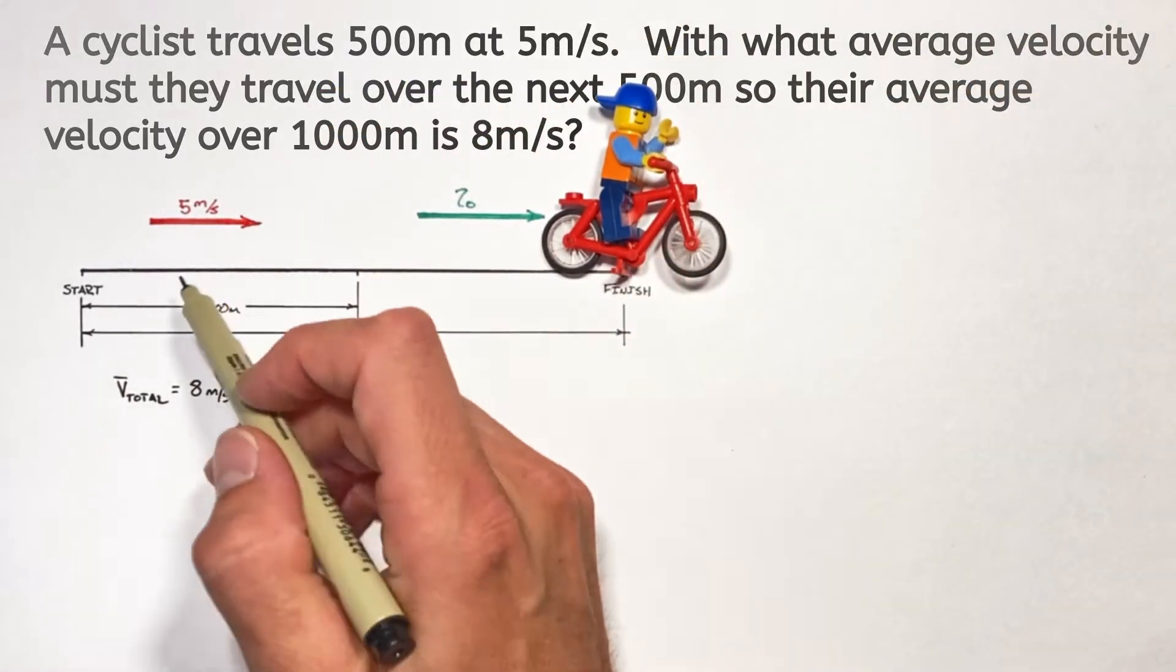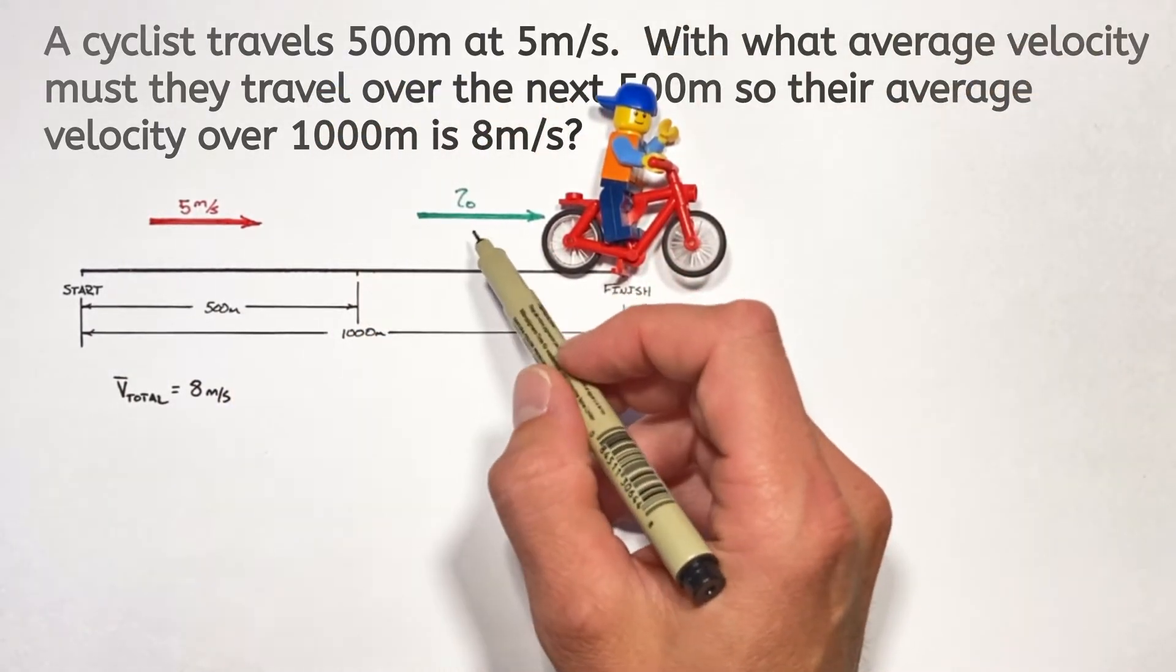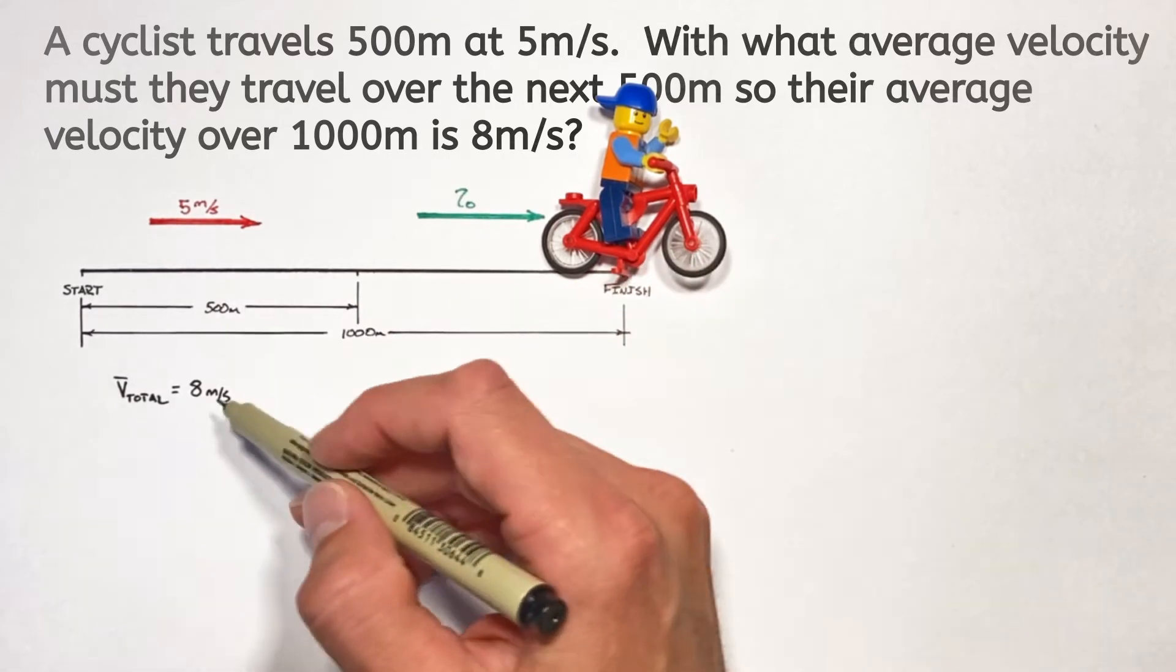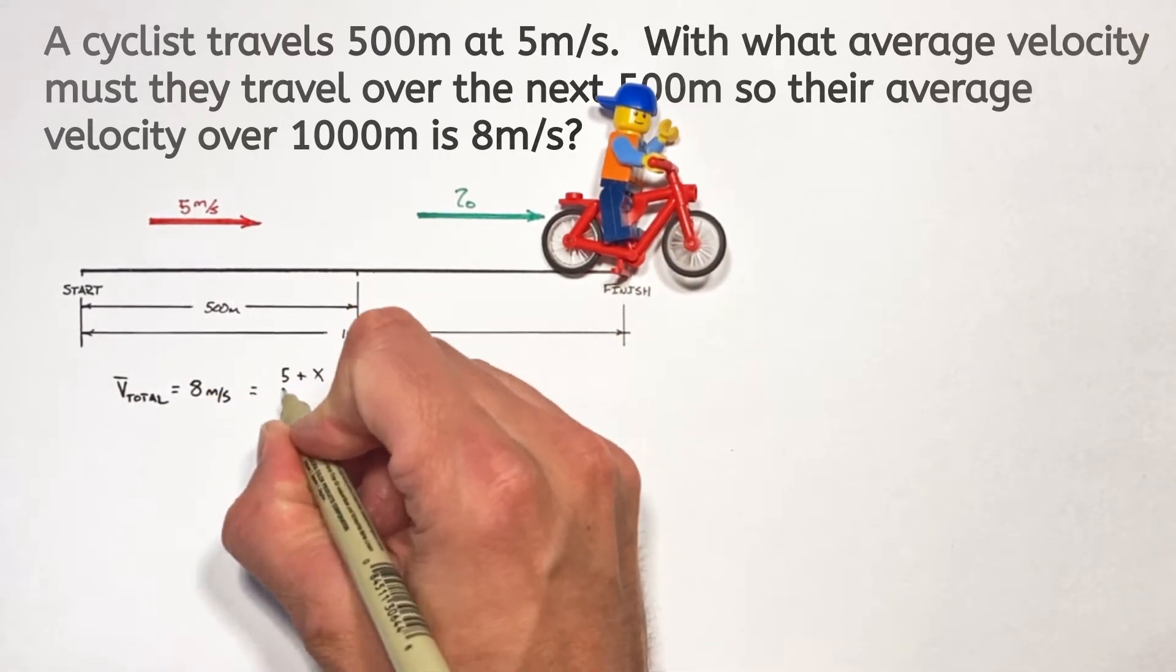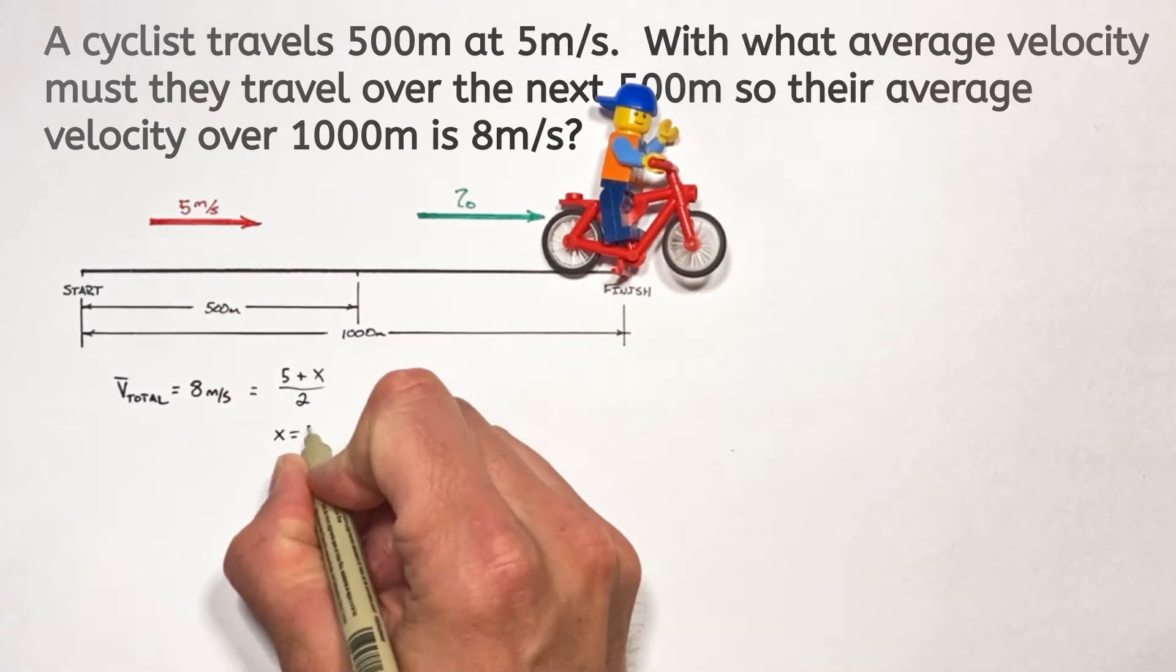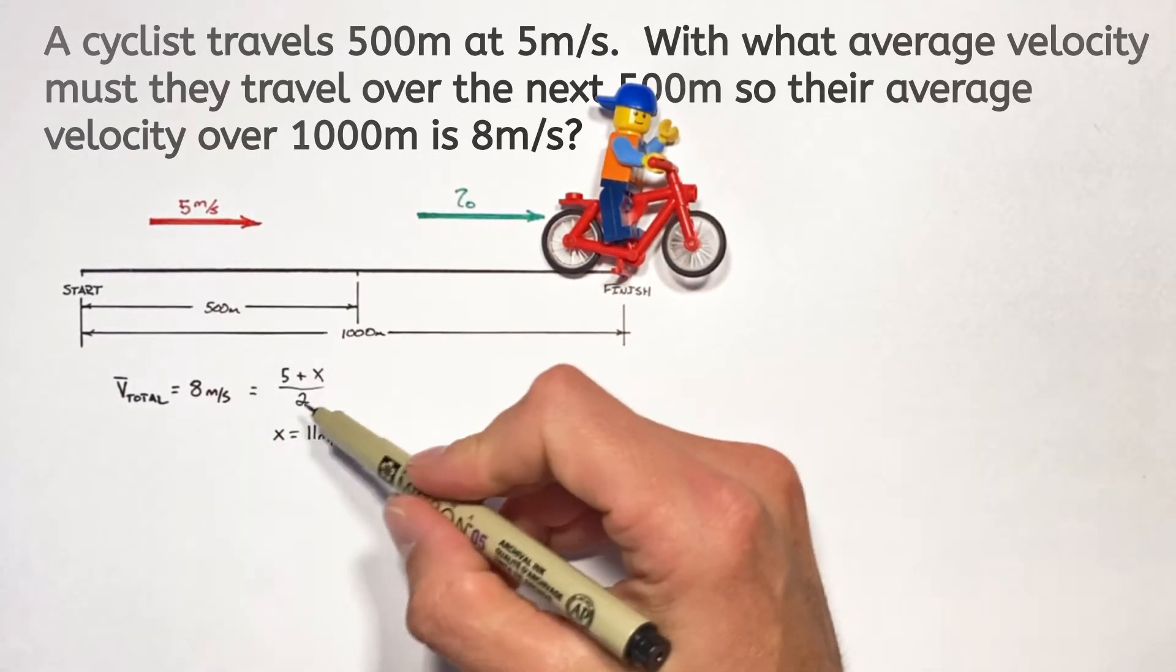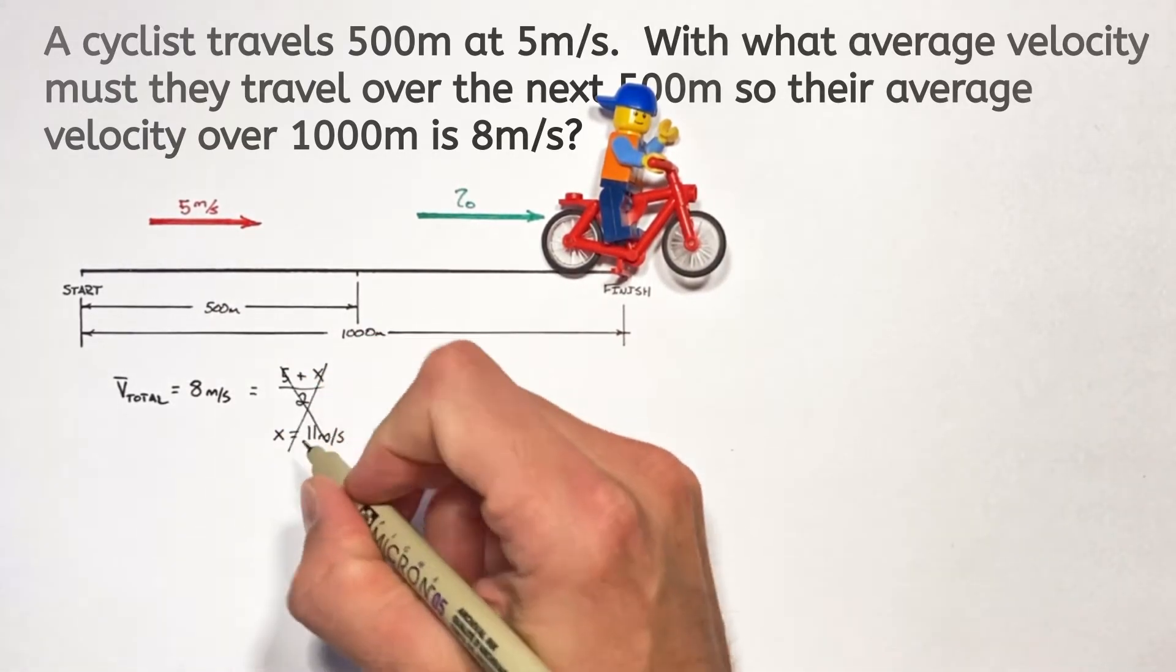Now the issue here is that people try to solve this problem simply by finding the average of two numbers that happens to work out to be 8. But the reality is that entire method is wrong.